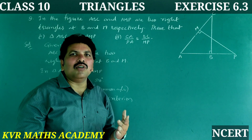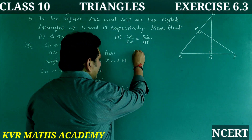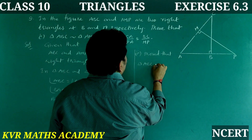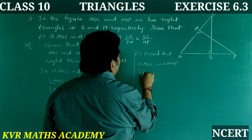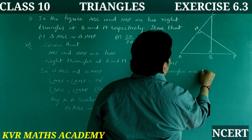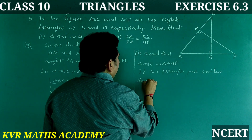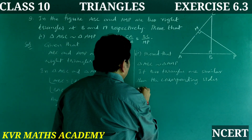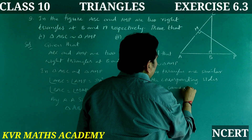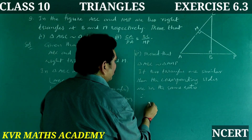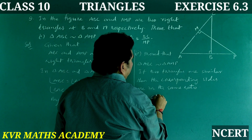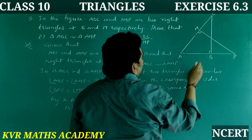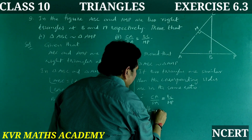Since triangle ABC is similar to triangle AMP, if two triangles are similar, then the corresponding sides are in the same ratio. Therefore, CA/PA = BC/MP. Hence proved.